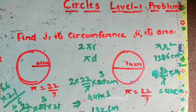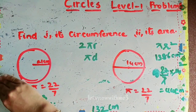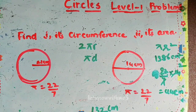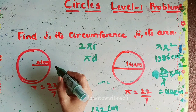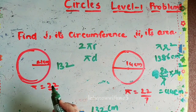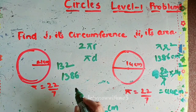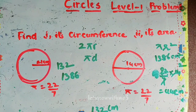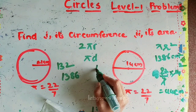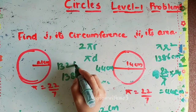Now let's find the area. The area formula is πr², but we have diameter, so we need to get the radius, which is half of 14 — that is 7 centimeters. Let me clear the board. So for the first circle: circumference is 132 centimeters and area is 1386 cm². For this circle, circumference is 44 centimeters.